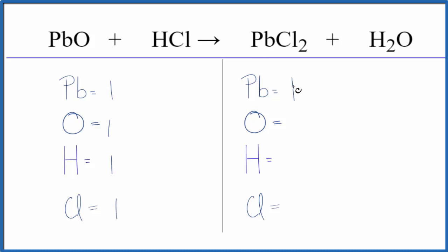On the product side, we have the one lead, one oxygen, but we have two hydrogens and then two chlorine atoms.